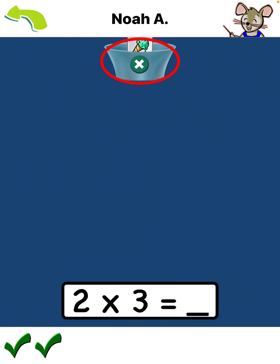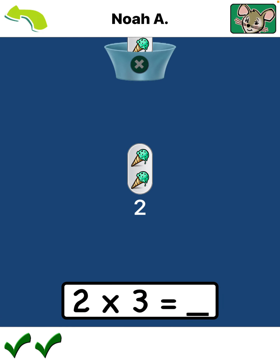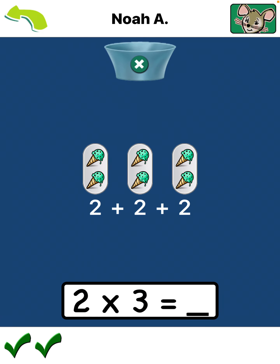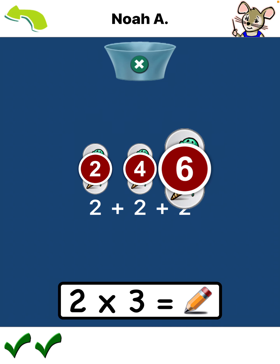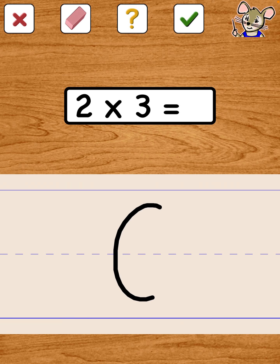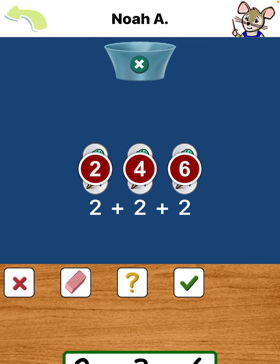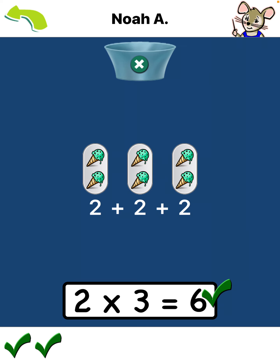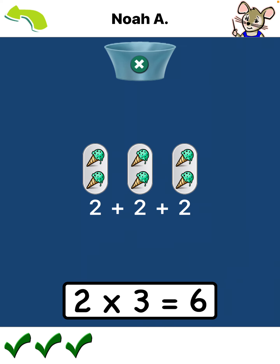Tap here: one, two groups, three groups, four, six. Good work. Two times three equals six. You earned a coin.